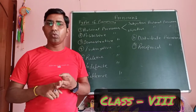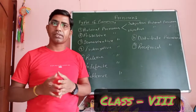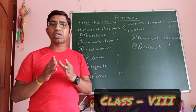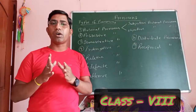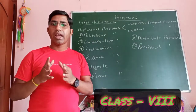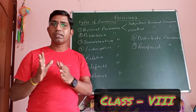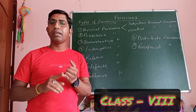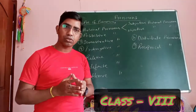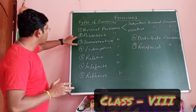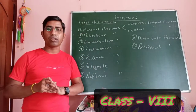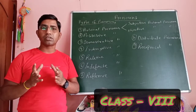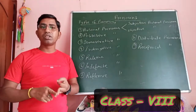Examples of subjective personal pronouns are: I, we, you, he, she, it, they. Objective personal pronouns are pronouns which are in the objective case and function as the object of the sentence — like me, us, you, him, her, them.